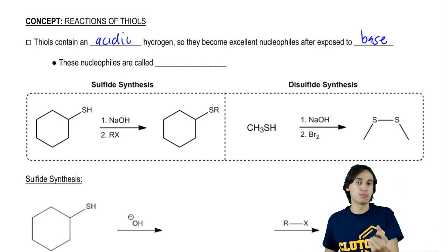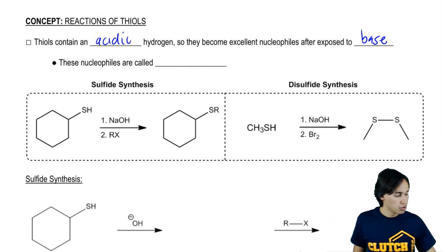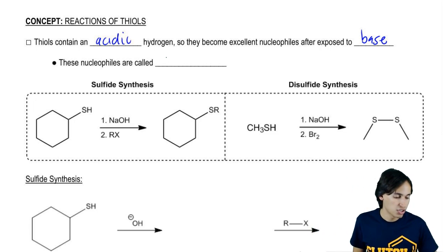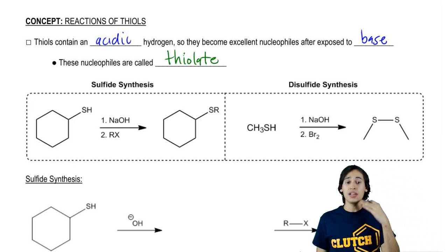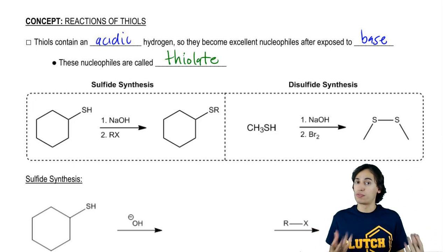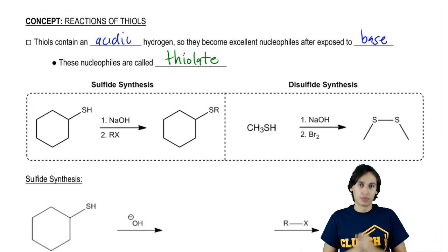So after you expose it to base, pull off that hydrogen and it's going to be a great nucleophile. Just so you guys know, that nucleophile, once the sulfur has a negative charge on it, is called a thiolate. So a thiolate nucleophile is going to be capable of performing a few different reactions. That's what we want to go over right now.